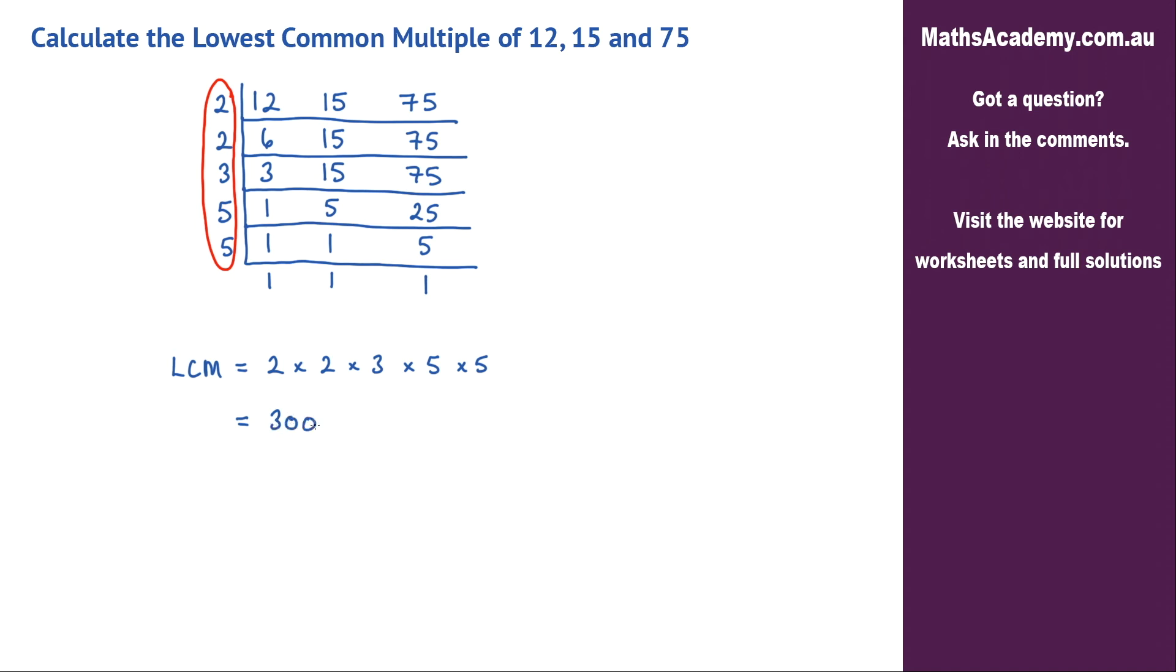So the lowest common multiple of 12, 15 and 75 is 300.